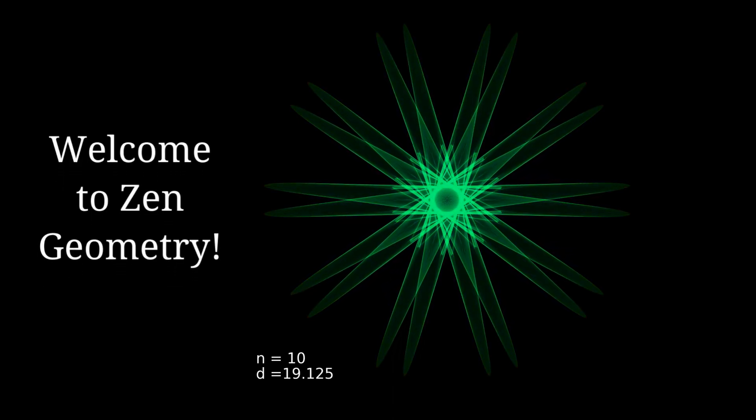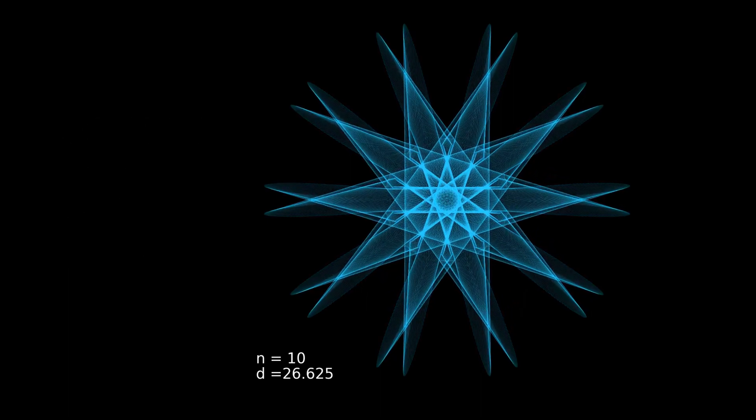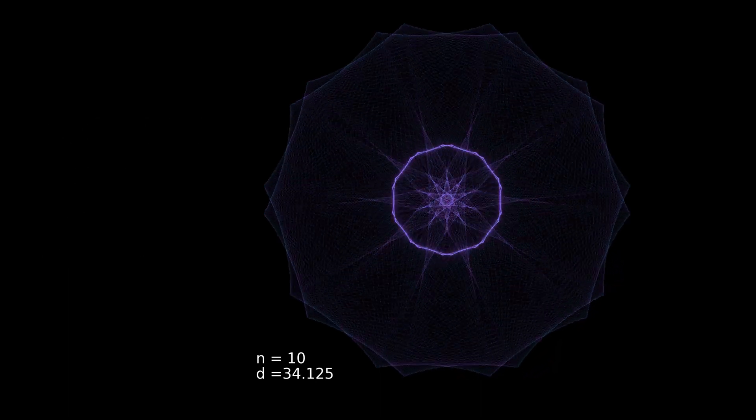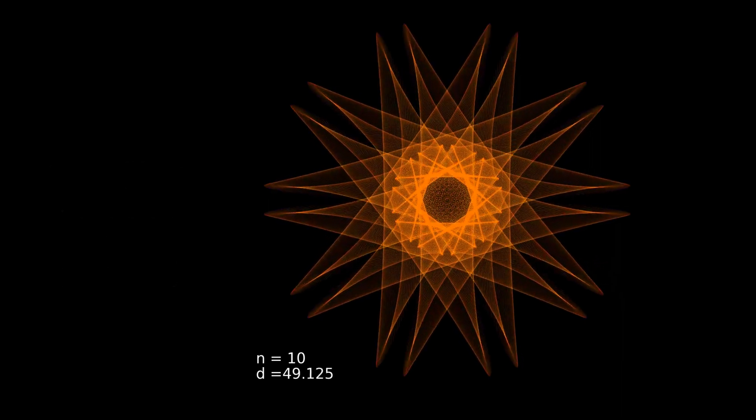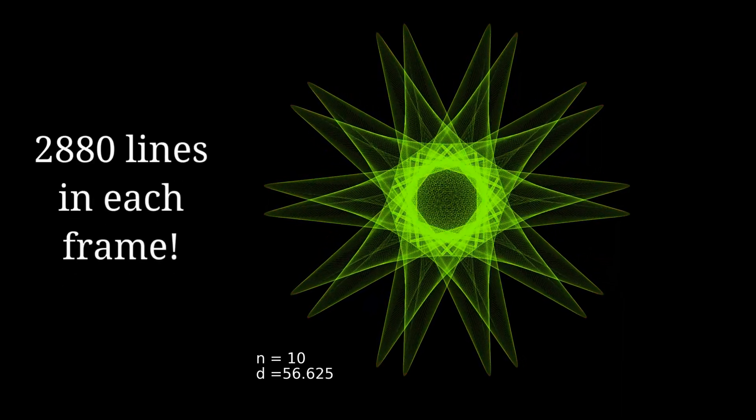Welcome to Zen Geometry. What you see is an animated math graph. Each frame is made up of nearly 3000 thin lines.